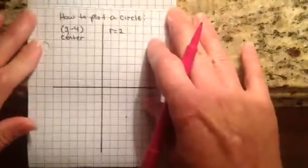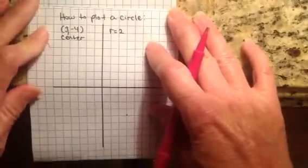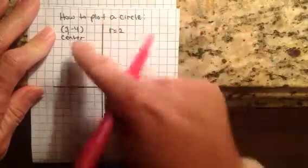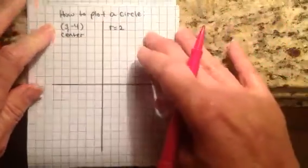So let's graph a few of these. So let's just start with the basics. How to plot a circle. So if we have a point at, or center, at 3, negative 4, I'm going to go ahead and plot that point. Here's 3, negative 4.